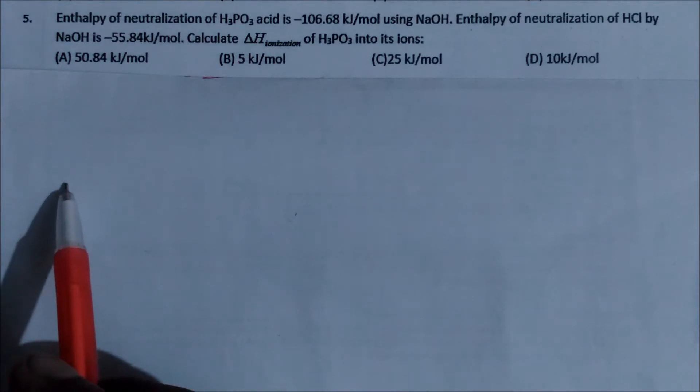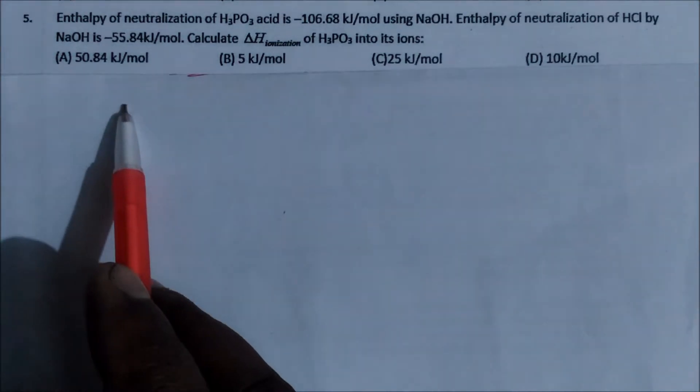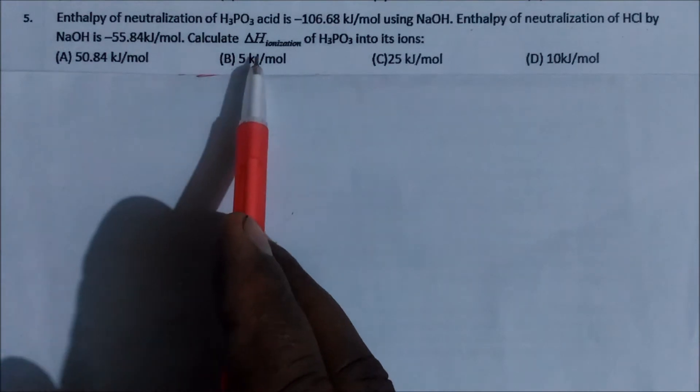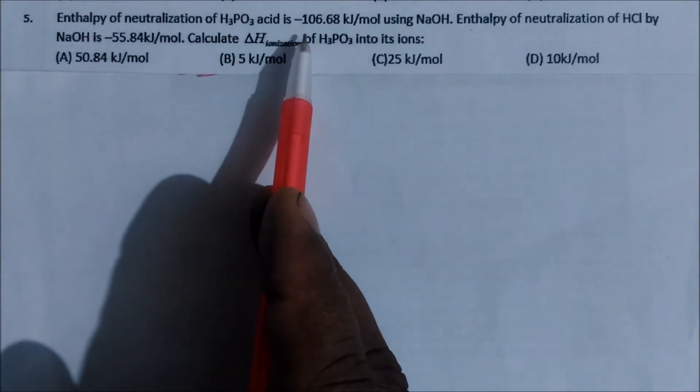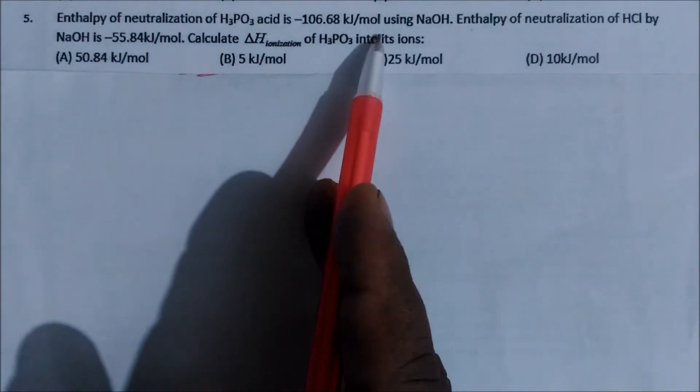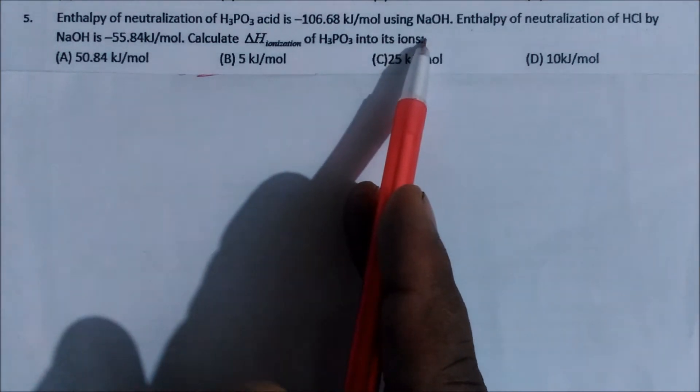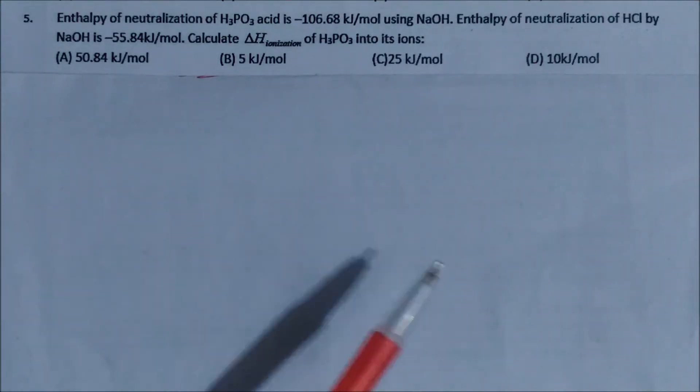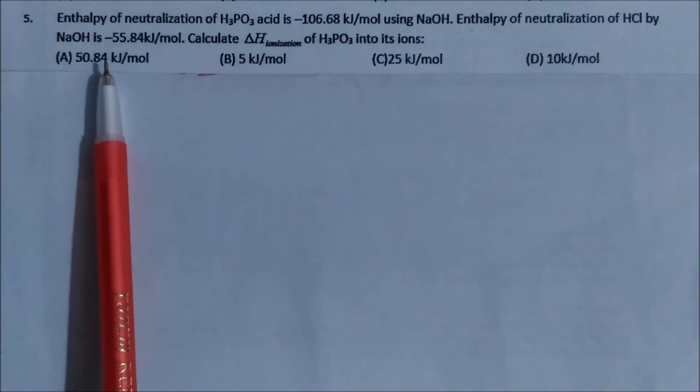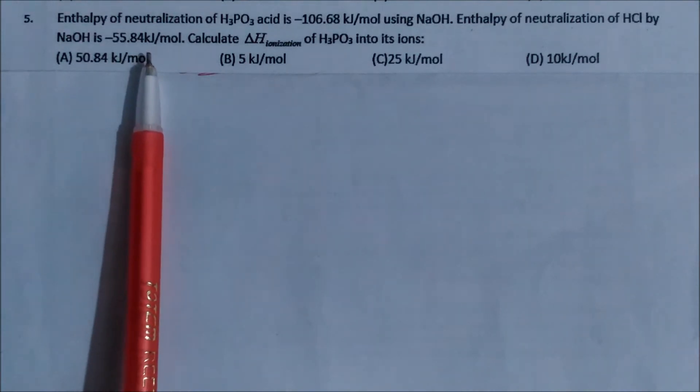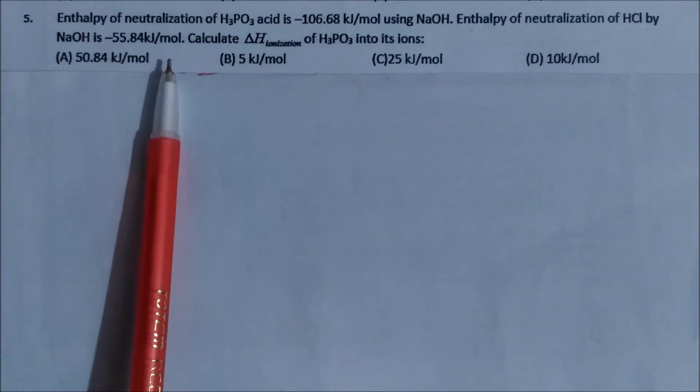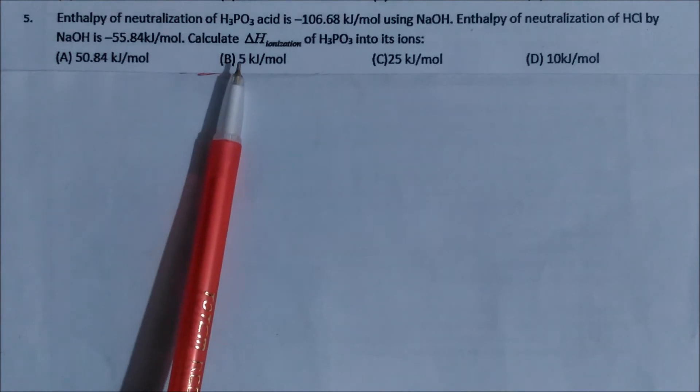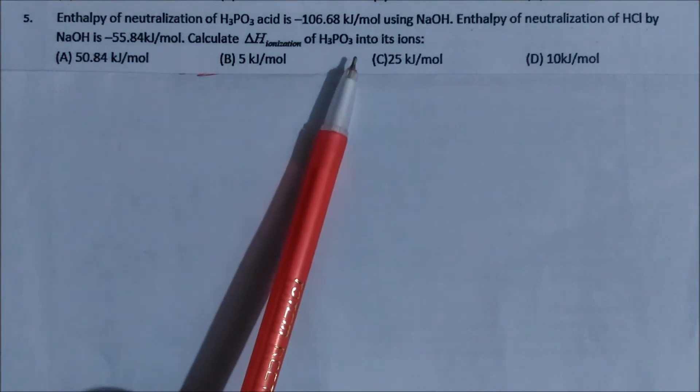Let us see this question. Enthalpy of neutralization of H3PO3 acid is minus 106.68 kJ per mole using sodium hydroxide. Enthalpy of neutralization of HCl by sodium hydroxide is minus 55.84 kJ per mole. Calculate delta heat of ionization of H3PO3 into its ions.